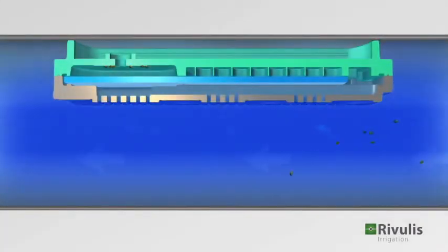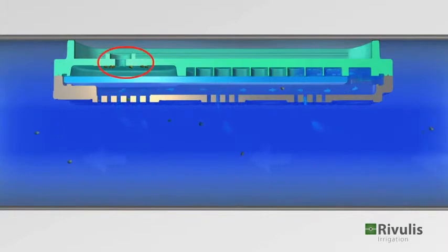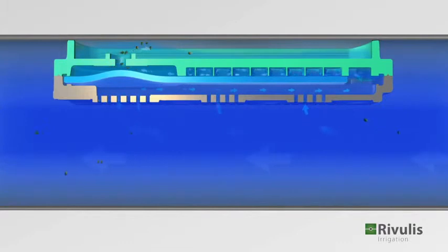Naturally, small dirt particles pass along with the flow, and the D5000 dripper filters prevent most of them from infiltrating the drip line. A small amount of particles may still pass through the filters and accumulate in the regulation chamber.